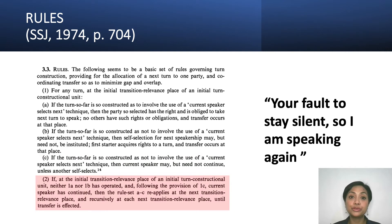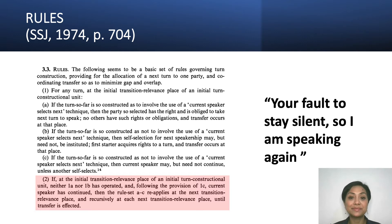In short, the three subset rules for Rule 1 say a current speaker may give the power to speak next to another speaker, and if that doesn't happen, anyone can take the floor, including the current speaker. Now, Rule 2 basically says if the current speaker continues to speak, Rule 1A, B, C apply again. Pretty simple, right? That's our first pass.